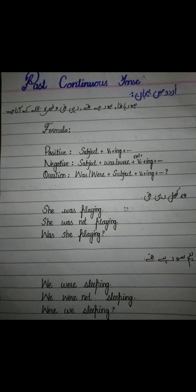Question sentence میں کیا ہوگا: was اور were جو ہے sentence کے start میں آ جائے گا، subject اس کے بعد آئے گا، پھر first form of verb ing کے ساتھ use کریں گے، اور last میں ہمیشہ question mark لگانا نہیں بھولنا۔